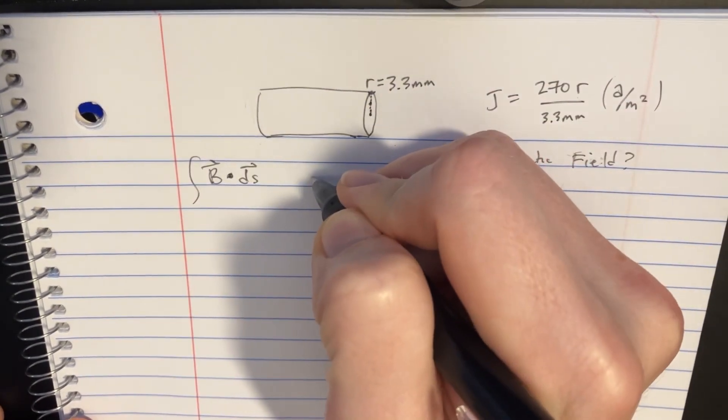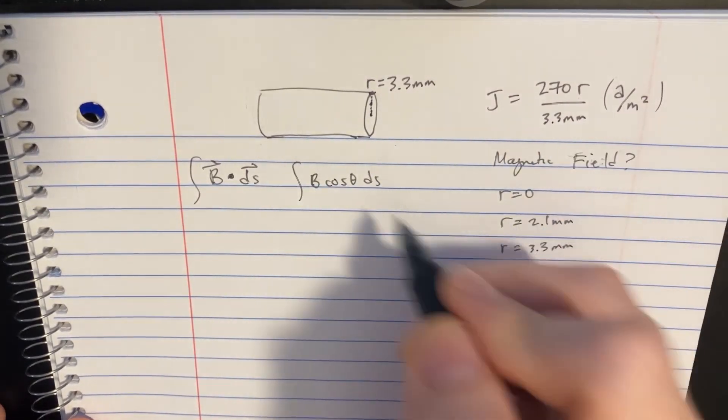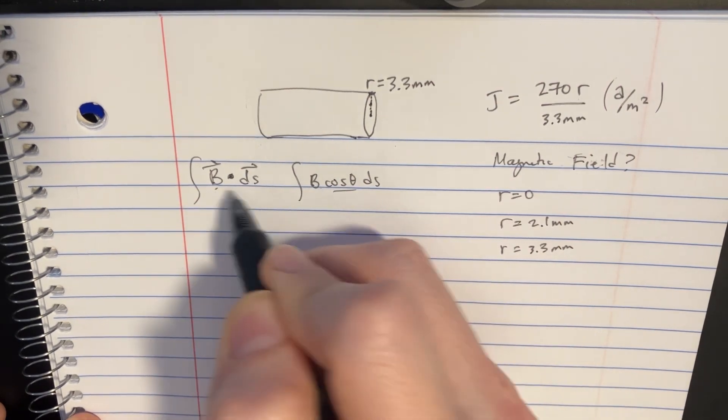So we're going to say B cosine theta ds in the integral here, and the theta is going to be the angle between these two.